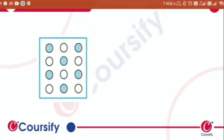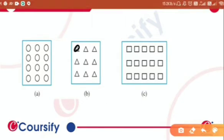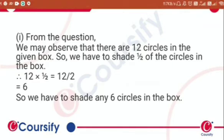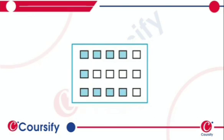From the question, we may observe that there are 15 squares in the given box. So we have to shade 3/5 of the squares in the box. 15 × 3/5 = 45/5 = 9. So we have to shade any 9 squares in the box.